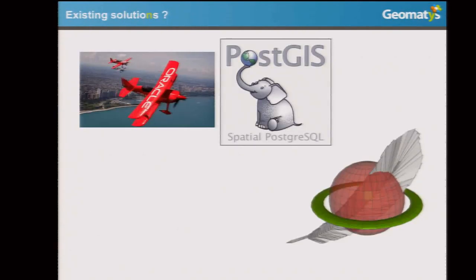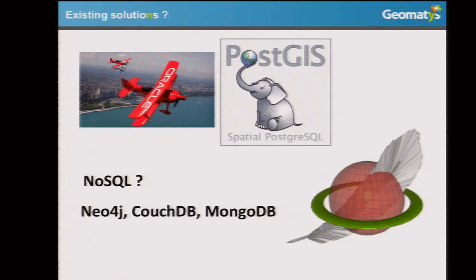So on the market, what are the solutions for a spatial database? Of course Oracle, PostGIS, SpatiaLite. But for NoSQL databases, there are not a lot of real spatial solutions. Neo4j, CouchDB, and MongoDB have some spatial extensions where you can store some geometries and do some filtering on them. But it was not as powerful as we were looking for.